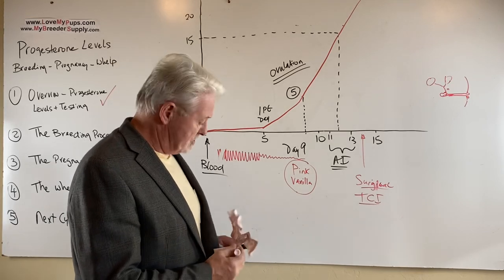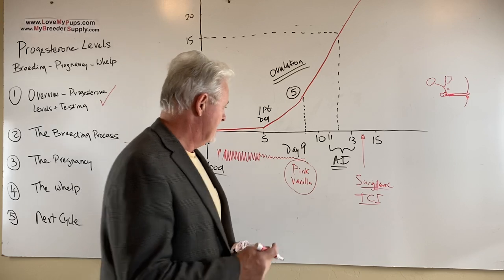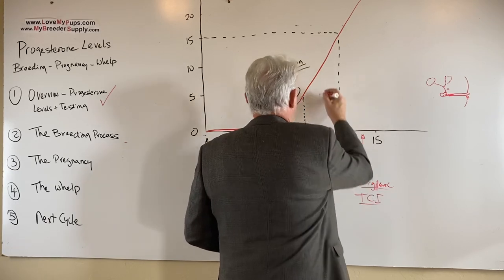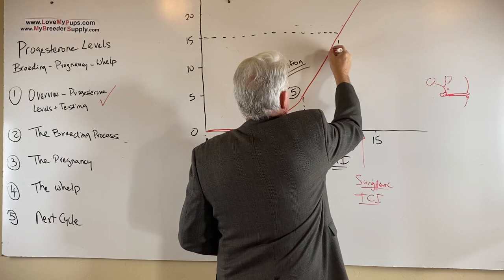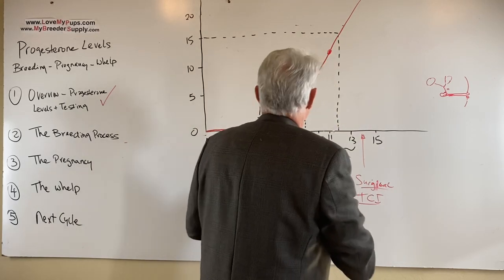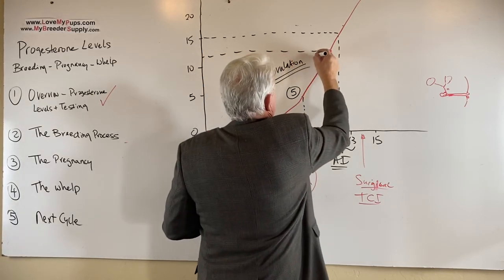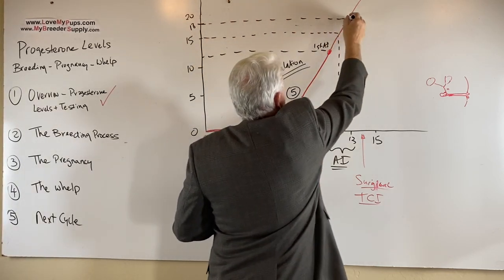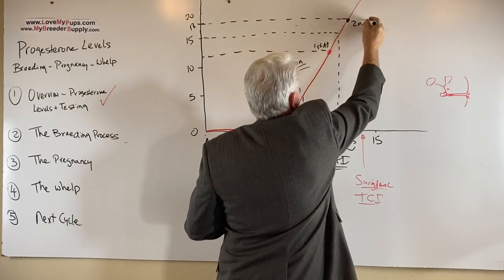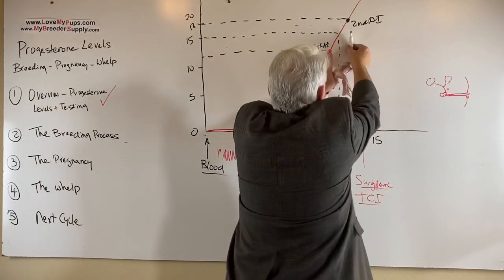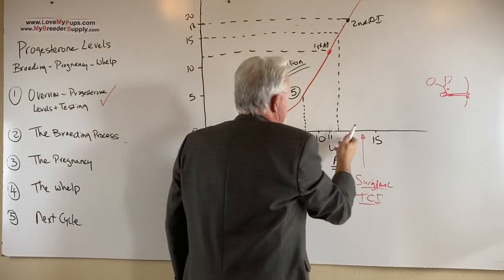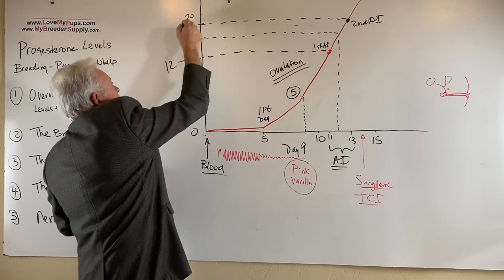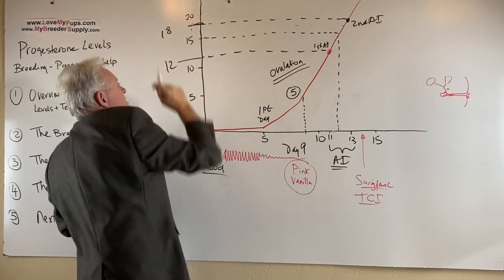So what I like to do is I like to do two AIs, two vaginal AIs. The first one about day 10 or 11 with a progesterone level of around 12. So I want to get in this region here. So I want to get approximately around a 12. And that's going to be my first AI. And then my second AI, I want to do around an 18. And that's going to be about two days apart. That's my second AI. That works really well, I find. About a two day spread. And you're typically something around day 11 and day 13 to do two AIs. That seems to work really well. But the important part is we want to do it on a progesterone level of 12 and a progesterone level of approximately 18. Those are the two numbers we'd like to do a vaginal AI on.